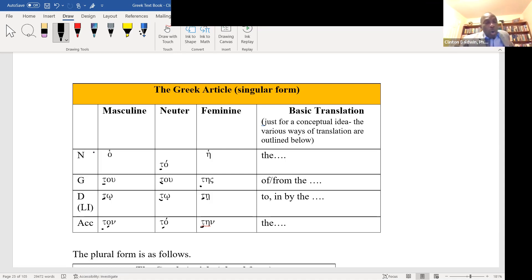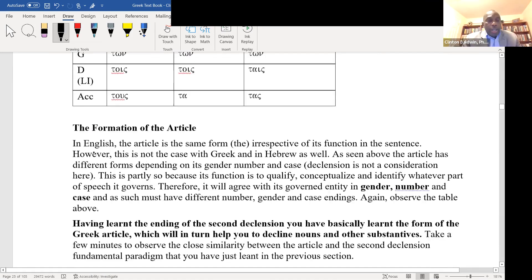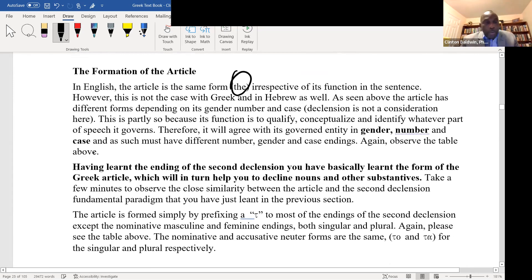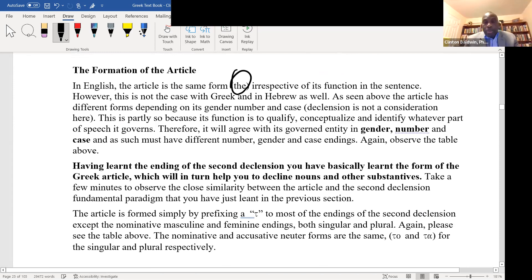Because the article is simply the addition of a tau before the ending, so to speak, of the second declension. So by and large, you'll see a tau added. This is the only exception here, the sigma is gone, so it is just ho. The tau is added, so it is also ho tau tau ton.